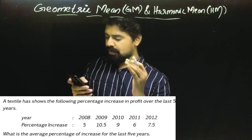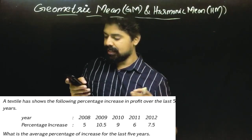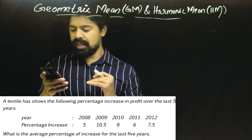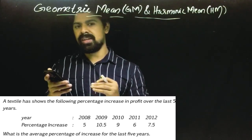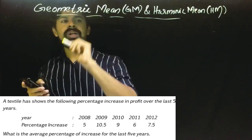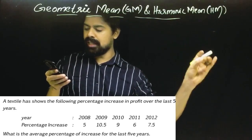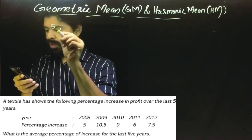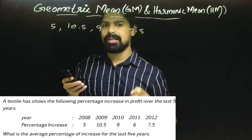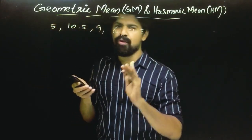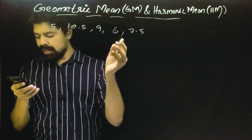A textile company has shown the following percentage increase in profit over the last 5 years. The question asks: what is the average percentage of increase for the last 5 years? When we need the average percentage increase, we look at the geometric mean. The raw data values are given, and GM is used for raw data — not for discrete or continuous frequency distributions.